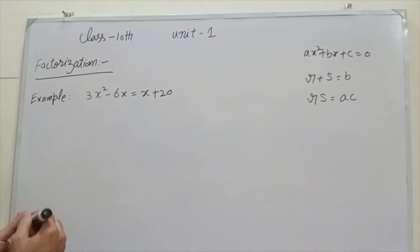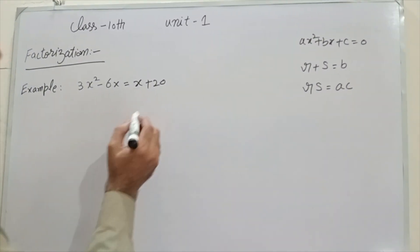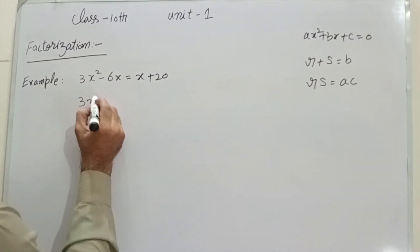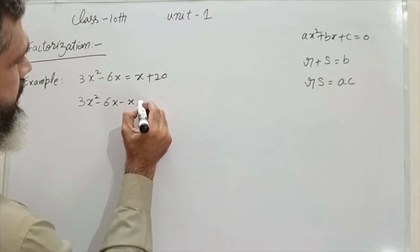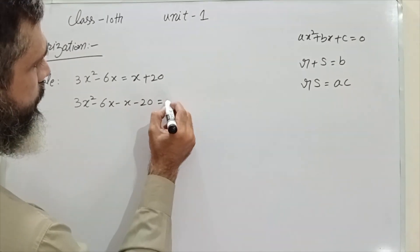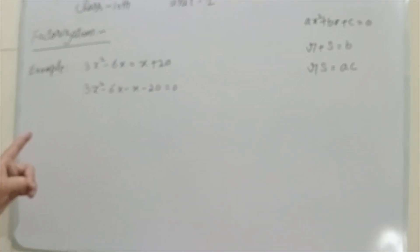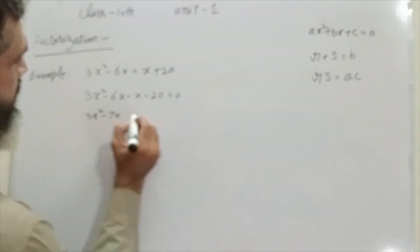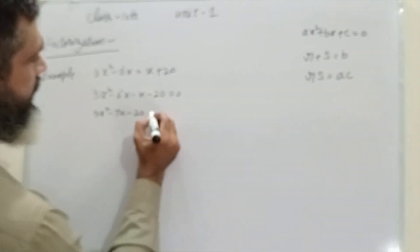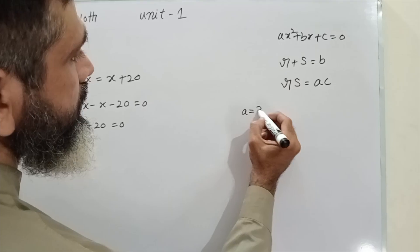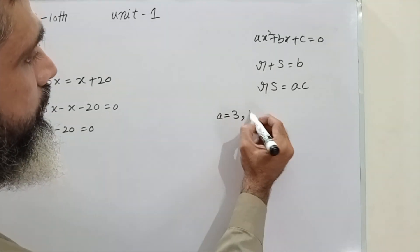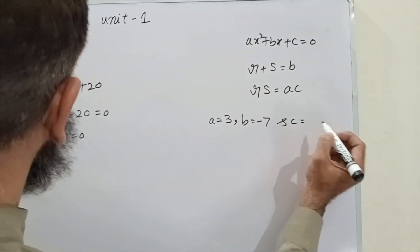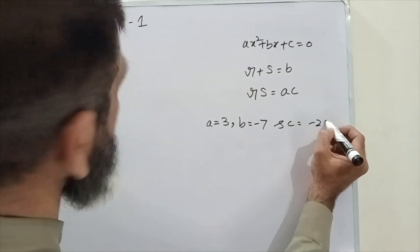Let us have an example: 3x² minus 6x is equal to x plus 20. First we convert it to standard form: 3x² minus 6x minus x minus 20 is equal to 0, which gives 3x² minus 7x minus 20 equals 0. Here a is 3, b is minus 7, and c is minus 20.